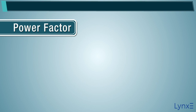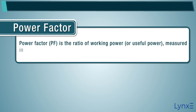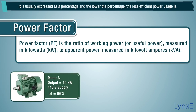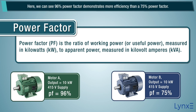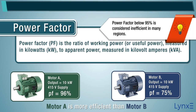Power Factor, PF, is the ratio of working power, or useful power, measured in kilowatts, to apparent power, measured in kilovolt amperes. It is usually expressed as a percentage, and the lower the percentage, the less efficient the power usage is. A 96% Power Factor demonstrates more efficiency than a 75% Power Factor. Note: Power Factor below 95% is considered inefficient in many regions.